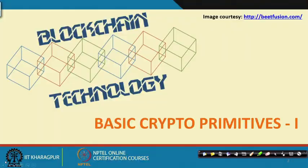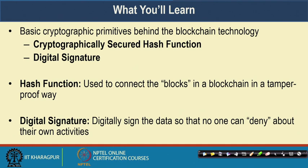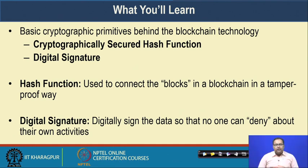Let us start with the basic cryptographical aspects of blockchain. We will discuss broadly about the basic crypto primitives over the next couple of lectures. Initially we will look into the details of hash functions and from there we will go to digital signatures. In this set of lectures we will look at two concepts: cryptographically secured hash functions and digital signatures, which work as the fundamental building blocks behind blockchain technology.